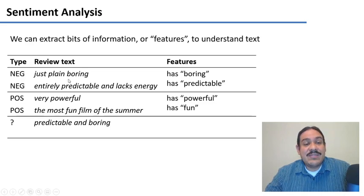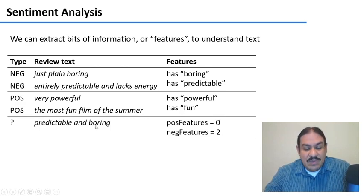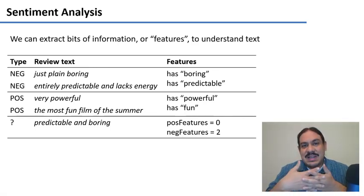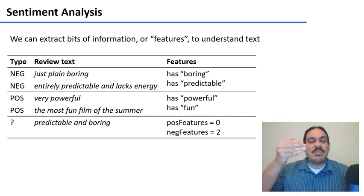We're going to extract bits of information or features from the text and we're going to try to figure out what makes a review negative, for example. So let's say that a review is negative if it has words like boring or predictable. We're also going to try to figure out what makes a review positive. Let's say a review is positive if it has words like powerful and fun. So if we have these features, these definitions of what makes a review negative or positive, we could then try to read the new review and try to figure out if it's more positive or more negative. This string, predictable and boring, has none of our positive features but two of our negative features. Therefore, we can predict that it is a negative review.